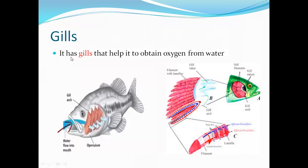Next, it has gills that help it to obtain oxygen from water. Fish has got gills. It helps the fish to obtain oxygen from water. Water enters through the mouth and goes out through the gills. When the water goes out through the gills, exchange of gases takes place here.